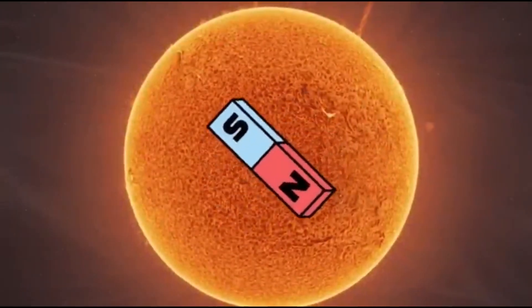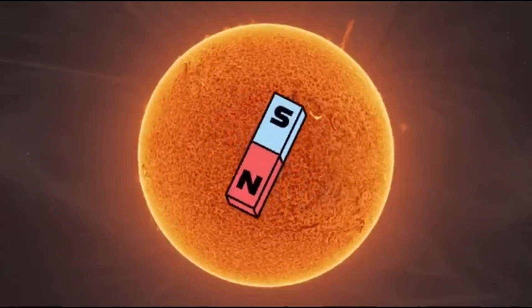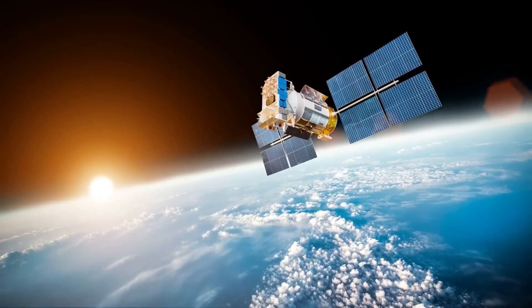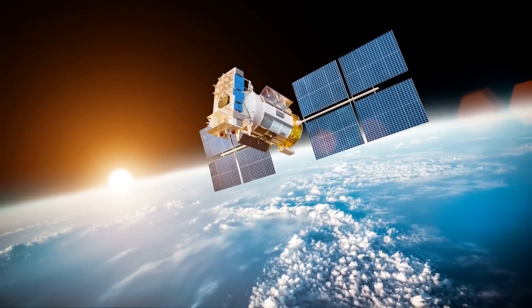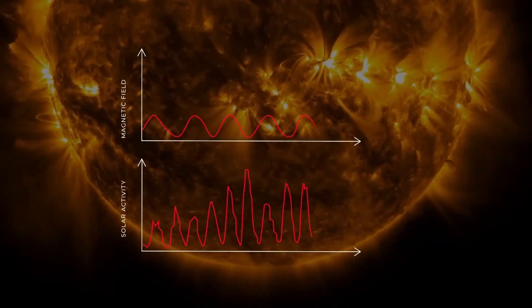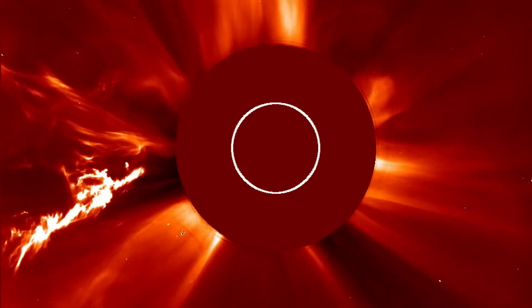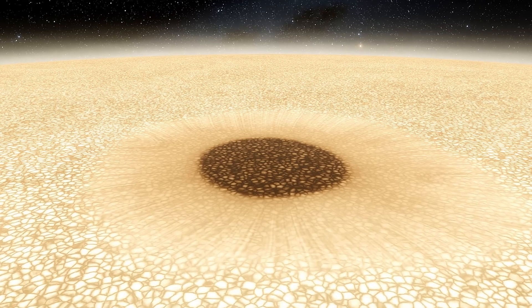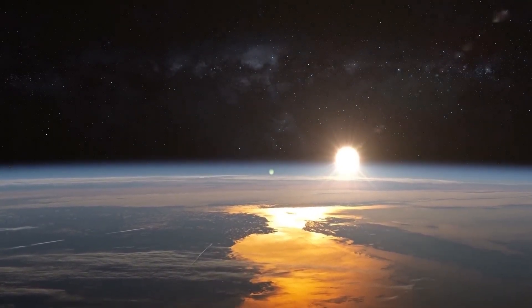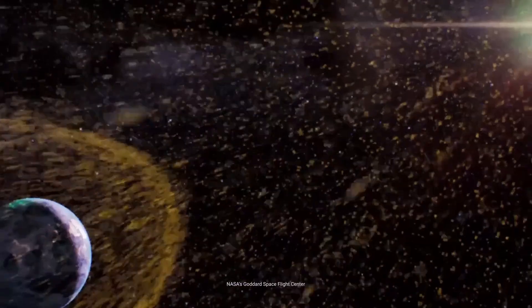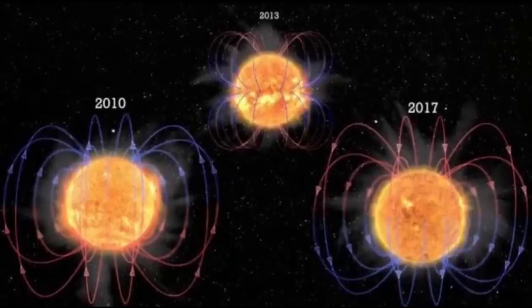Solar Cycle 24, which started in 2008, was particularly weak. Sunspot numbers and solar activity were well below average, marking it as one of the least active cycles in over a century. Scientists were surprised by its low intensity, as it had far fewer solar flares and coronal mass ejections than expected. This quiet cycle raised questions about what causes such variability in solar activity and whether a future grand minimum, similar to the Maunder Minimum, could occur. When the current solar cycle began in December 2019, it was predicted to be even weaker than the preceding cycle.